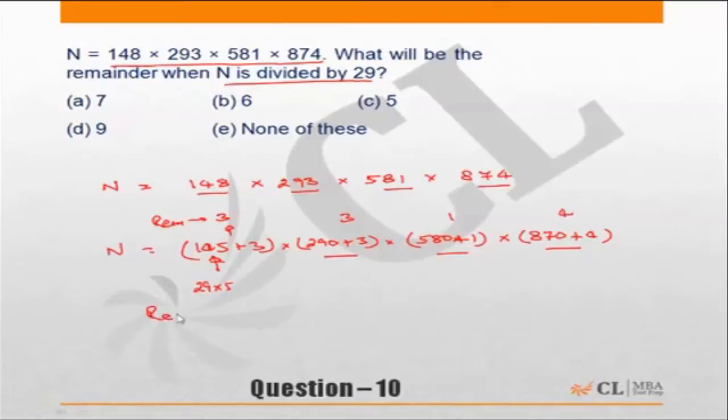Effectively, the remainder when N is divided by 29 will be 3 into 3 into 1 into 4, which is nothing but 4 into 3, 12, into 3, 36. So the remainder is 36.